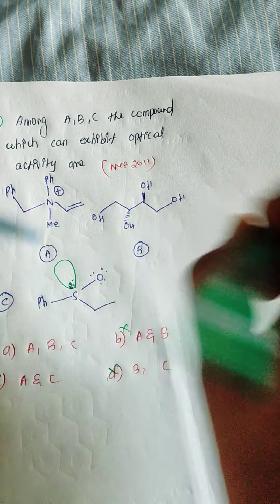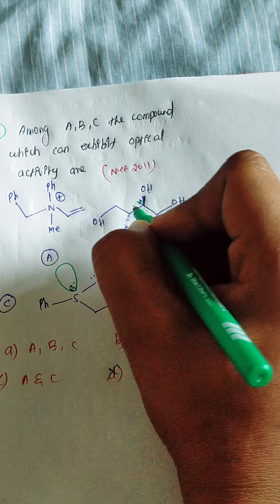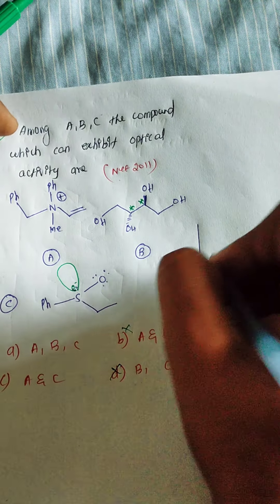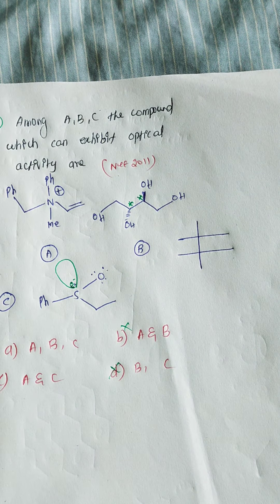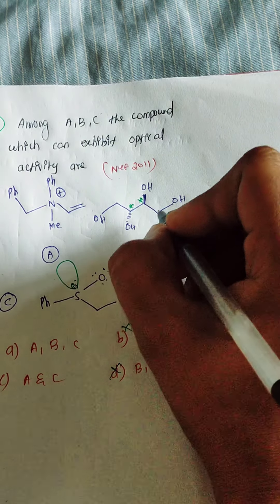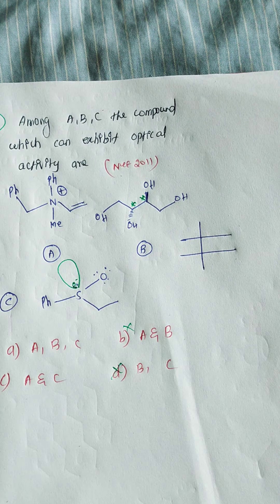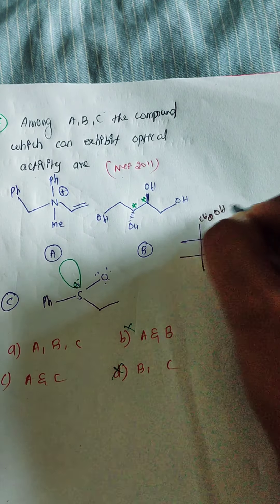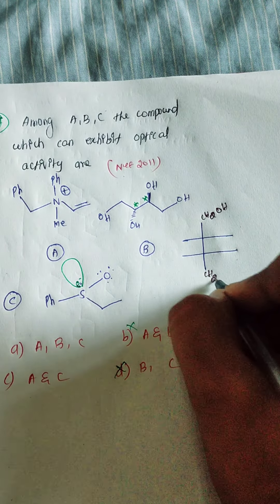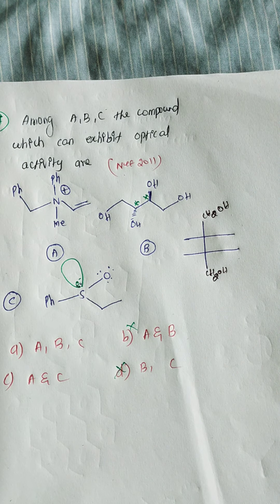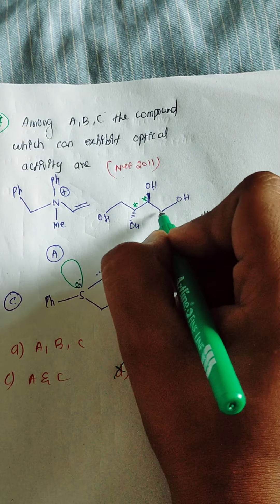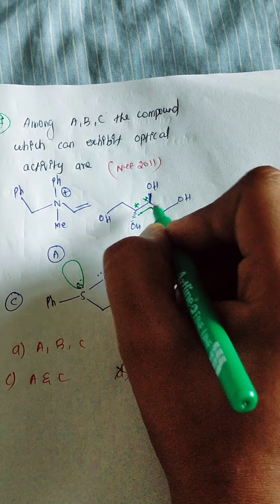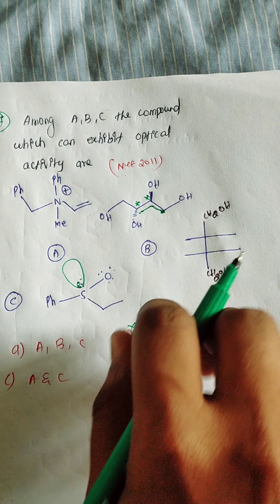For molecule B, there are two chiral centers. Looking at the right-hand side and left-hand side arrangements around each chiral center, comparing the substituents above and below the plane on each carbon.